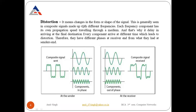The second impairment is distortion — it means changes in the form or shape of the signals. Whenever the form or shape of a signal changes, it is called distortion. This is generally seen in a composite signal made up of different frequencies. A composite signal is formed whenever we combine more than one signal, and since every signal has a different frequency, there may be chances of distortion.